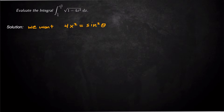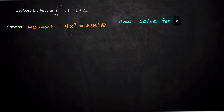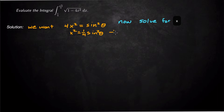So now we solve for x to figure out what the substitution should be. First, divide both sides by 4, giving us x² = (1/4)sin²θ. Then taking the square root of both sides, x = ½sinθ.